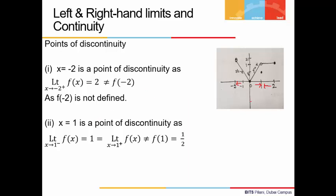At x = 1: approaching from the left, the function tends towards 1; approaching from the right, the function also tends towards 1. So the left-hand limit and the right-hand limit are both equal to 1. However, the function value at x = 1 is given as 1/2, not 1. Since the limit (1) does not equal the function value (1/2), x = 1 is a point of discontinuity.